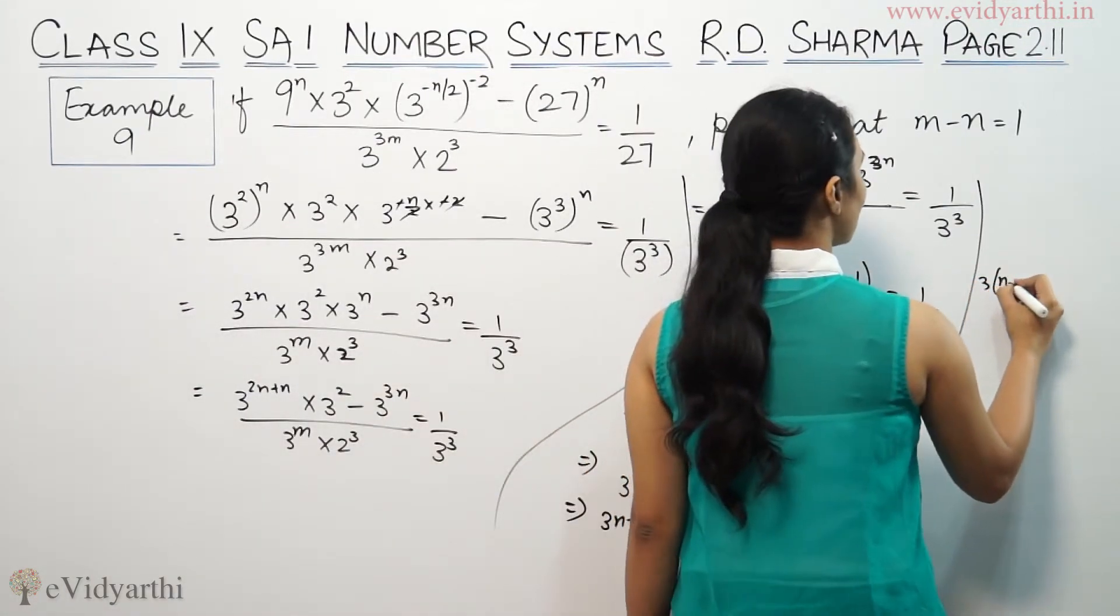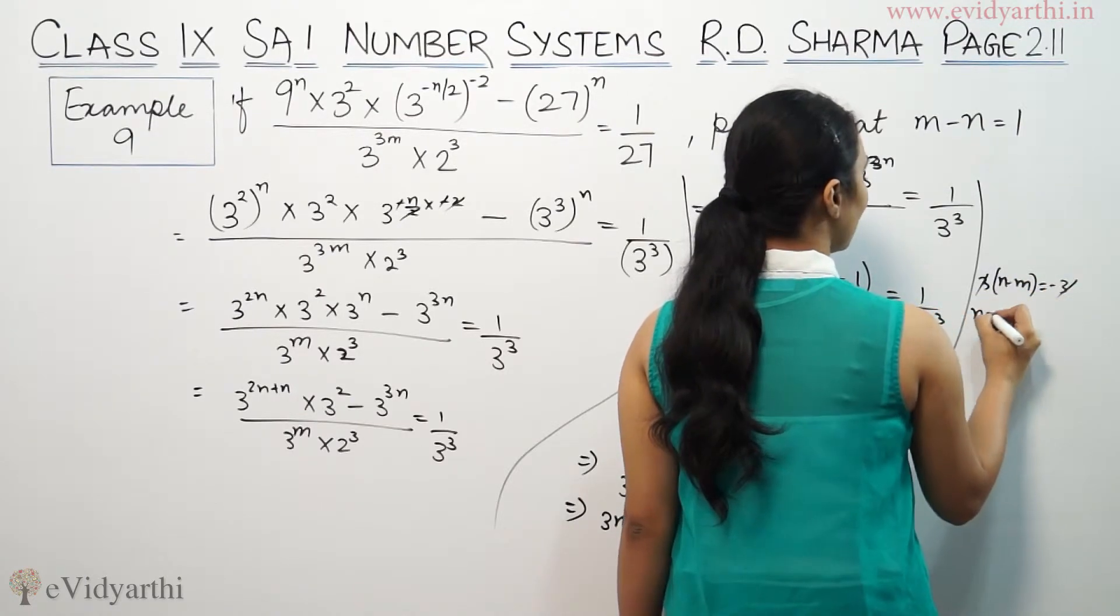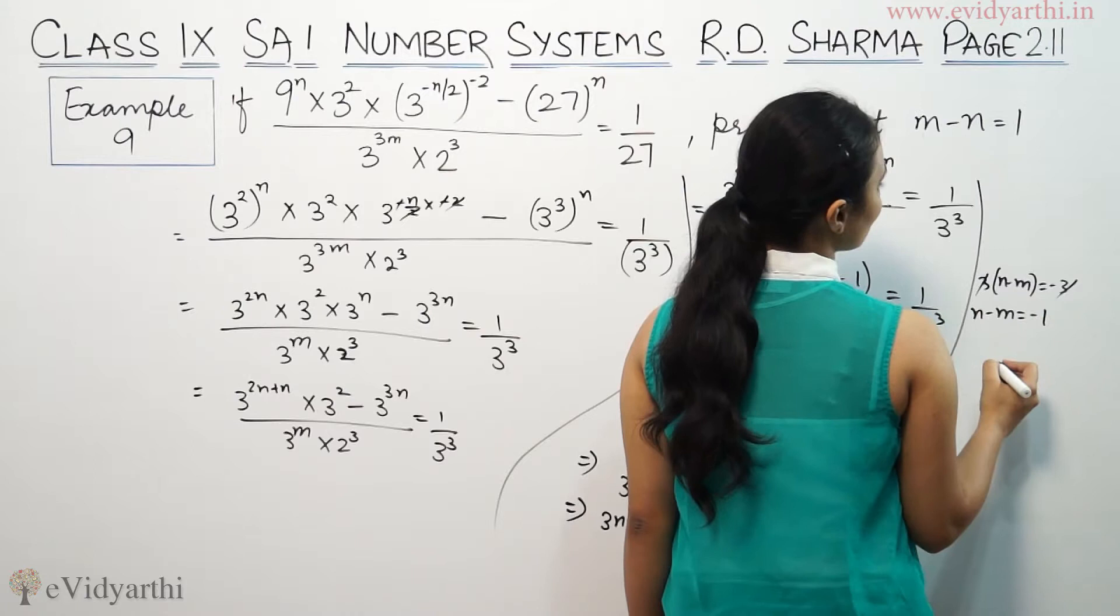Dividing by 3, we get n minus m equals minus 1.